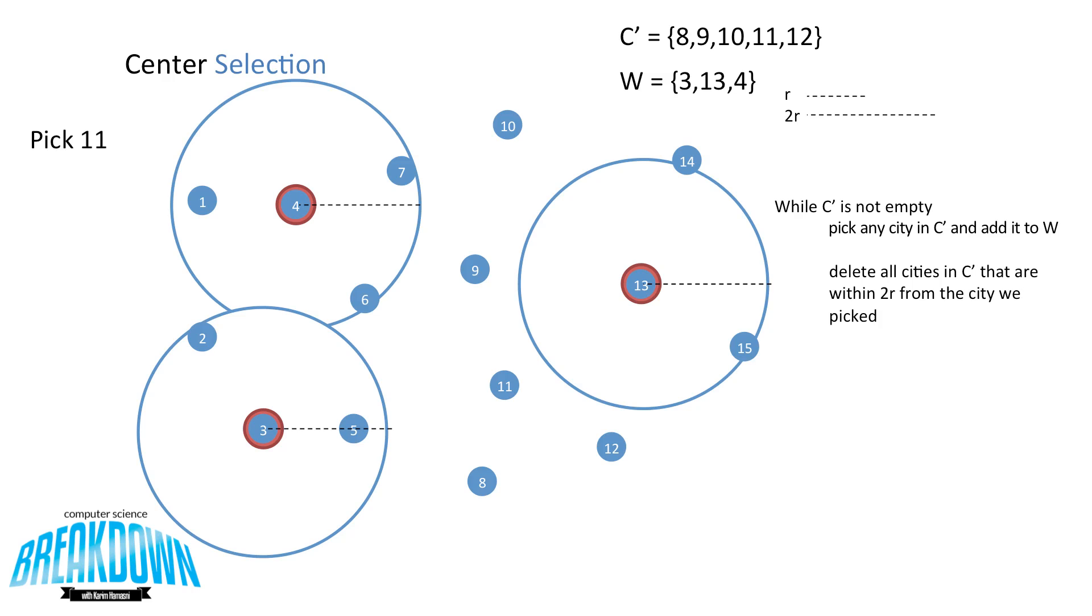Next we're going to pick city number 11. So we can now remove 11 from c' and add it to w. And we can now draw the circle that is 2r around 11. And we can see that cities 8, 9, and 12 fall within the circle, so we can remove them from c'.